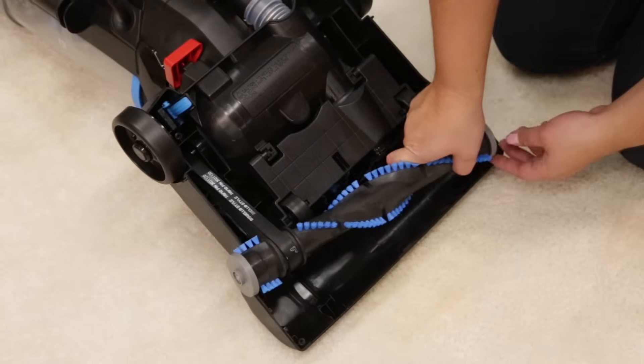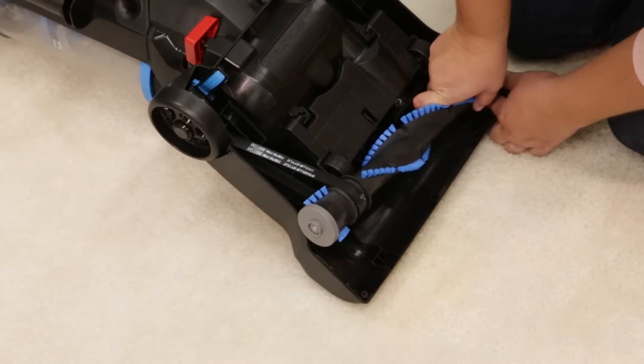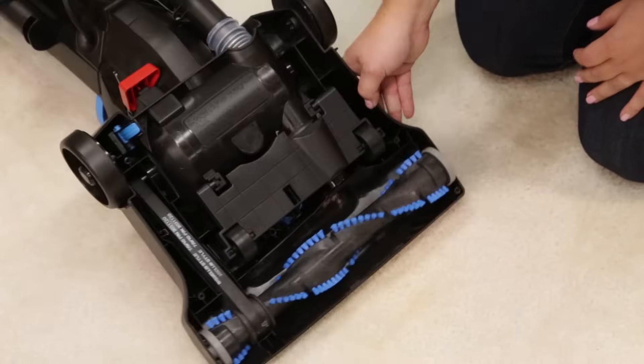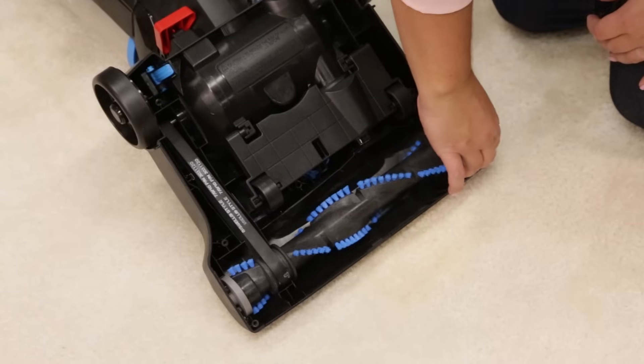Replace the brush roll and belt by looping the belt over the motor shaft and the brush roll. Line up the end caps and pull the brush roll. This will stretch the belt. Align the belt by spinning the brush until centered.